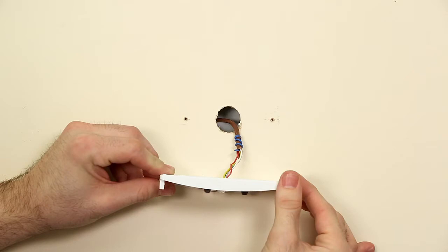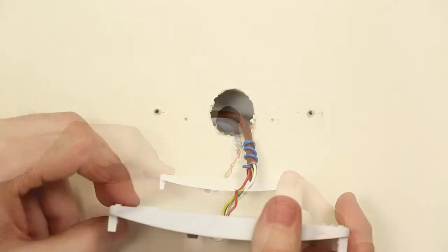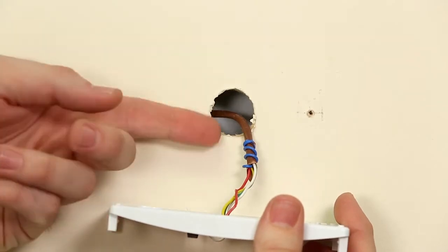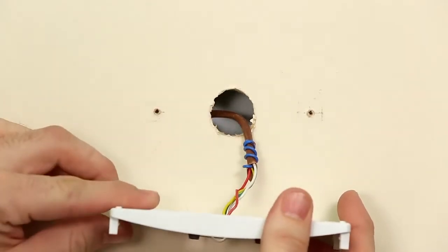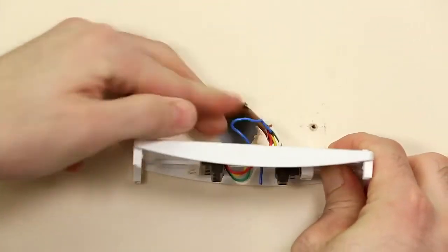As you are pulling the base plate away from the wall, look for a wire bundle. Once you locate the bundle, look to see if there is an unused wire. If you see an unused wire in the wire bundle, you can use this as your C wire. Pull this wire out from behind the wall.